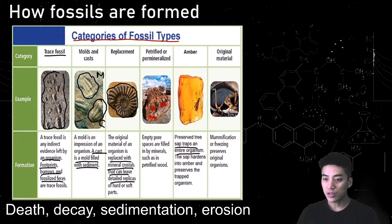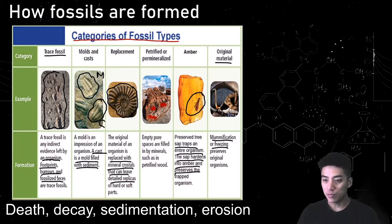Now you have amber, which is when tree sap traps an organism and preserves it quite nicely — for example, a mosquito or some insect inside of amber. And last but not least, you have mummies or freezing of an organism, where the original material itself is preserved. These all do a good job of keeping a record or evidence of things that used to live in the past, and these are known as fossils.